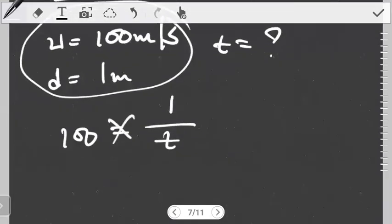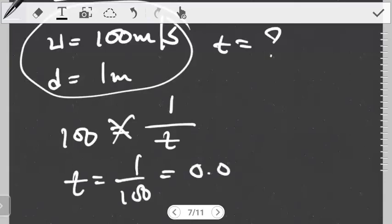From here we cross-multiply. We see that time is equals to 1 over 100, and then this becomes 0.01 seconds. This is a very, very small value, which actually makes sense. You want the impulse to travel very fast so that it can be interpreted and the correct action has to be taken.